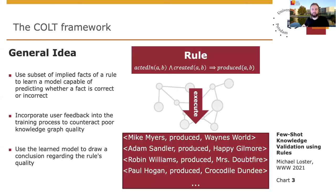Let's take a closer look at the COLD framework. We start with a rule whose quality we want to evaluate. In this case, we selected a rule that states if A acted in B and A created B, then A has produced B as well. Executing this rule on the knowledge graph yields all triples that satisfy the rule. In this concrete example, we would get facts such as Robin Williams produced Mrs. Doubtfire. But is this conclusion correct?